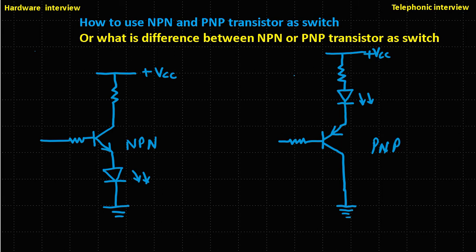The NPN transistor has the collector at this point; the PNP transistor has the collector at this point. The NPN transistor has the emitter at this point, and the PNP transistor has the emitter at this point. This is the base, and this is also the base.